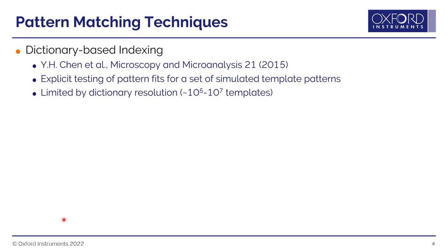Up to now, there have been only a few published pattern matching techniques. Perhaps the most famous is dictionary-based indexing, first proposed in about 2015, where you generate a library of simulated template patterns. That library can be very large — typically in the order of 100,000 up to a few million individual simulations — and you need to do that for every phase in your dataset, with a larger number as the symmetry of the phase decreases. You're very much limited by the resolution of the dictionary. However, it showed great benefit in extracting more information from very poor quality patterns where Hough-based indexing struggles.